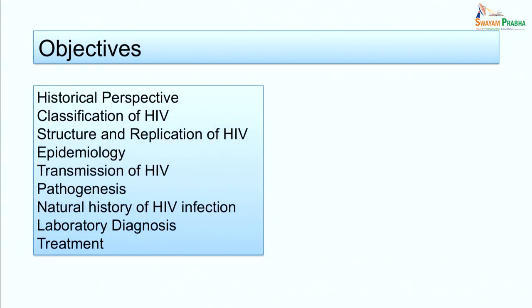This session is on HIV virus. The objectives for this session are: at the end of the session, you will have a historical perspective and know about the origin of the virus. You will be able to describe the classification, structure, and replication of HIV, its epidemiology, transmission, pathogenesis, natural history, laboratory diagnosis, and treatment.